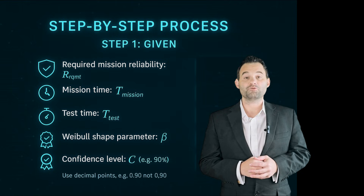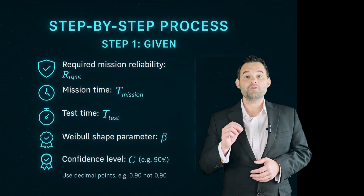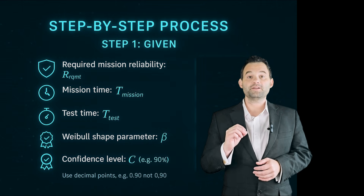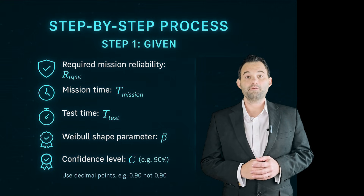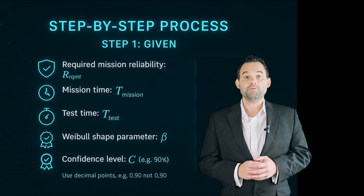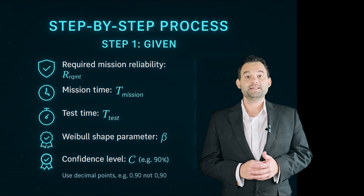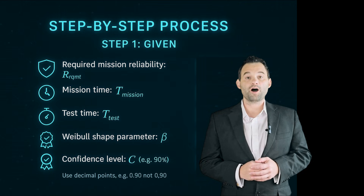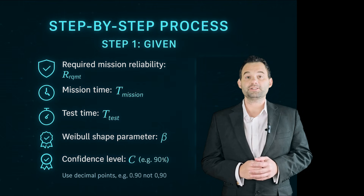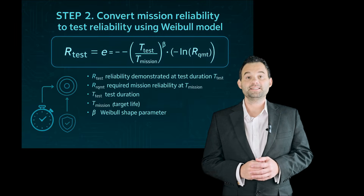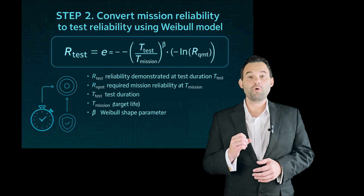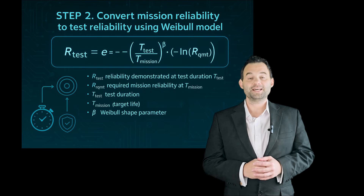Let's walk through how to implement the parametric reliability demonstration calculations to determine sample size for a test. Step 1 — Given: required mission reliability R-requirement, mission time T-mission, test time T-test, Weibull shape parameter beta, and confidence level — for example, 90%. Step 2: convert mission reliability to test reliability using the Weibull model, as demonstrated in the diagram.